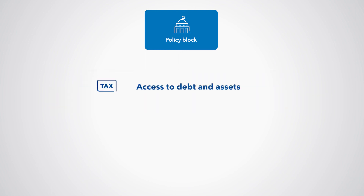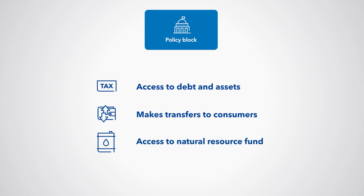The government also collects taxes and makes transfers to consumers. In DIGNAR, the government also receives revenues from royalties and has access to a natural resource fund — that is, a sovereign wealth fund that can collect the savings from resource windfalls.